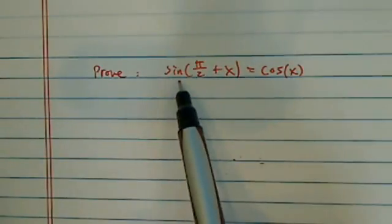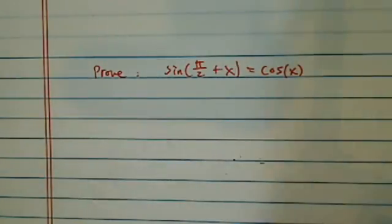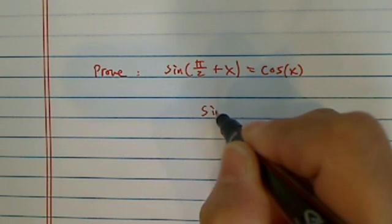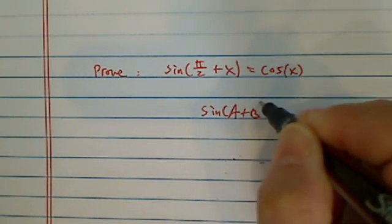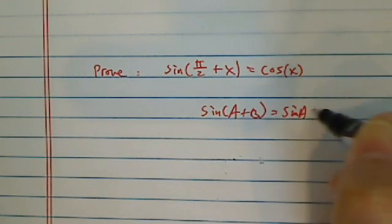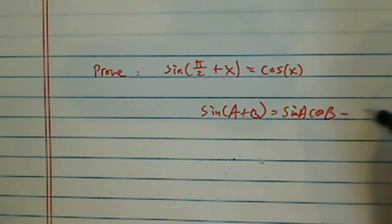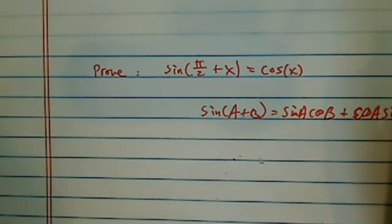To prove this trig identity is correct, you got to know the formula that sine of a plus b equals sine a cosine b plus cosine a sine b.